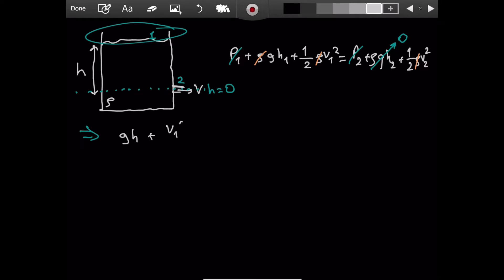So we have g h plus v1 squared divided by 2 equaling v2 squared divided by 2. v2 will be v. So we are solving for v2, I mean for v then. Which means v squared is equal to - I multiply by 2 to get 2 g h plus v1 squared.